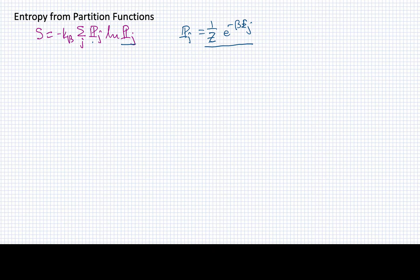I want to take this expression for pj and plug it in here, but not over here. I just want to use this to substitute for the argument of the logarithm in this expression. When I write this out, I'll have minus kb times the sum over j of the probability sub j. I'll separate this in brackets.